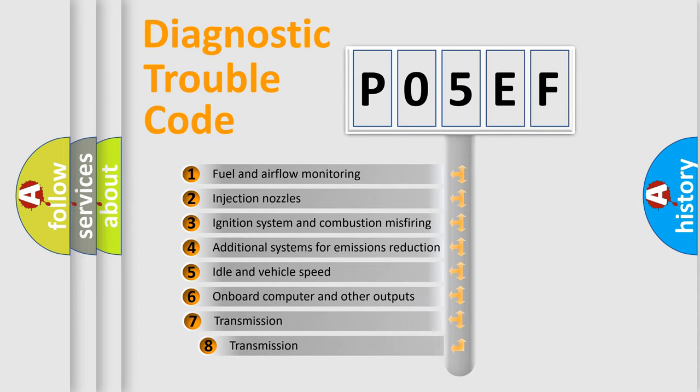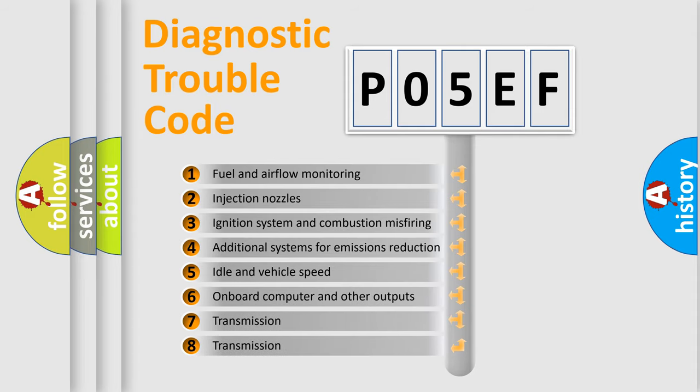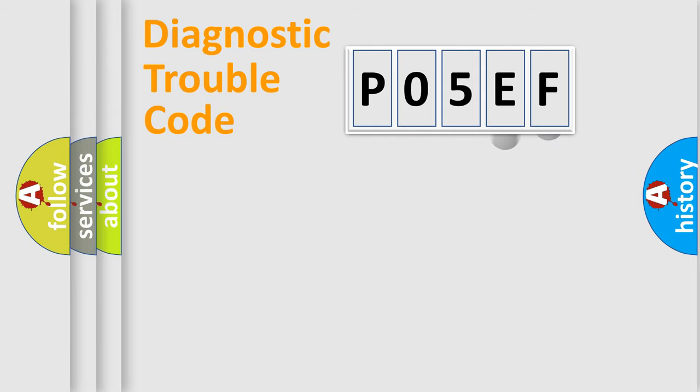The third character specifies a subset of errors. The distribution shown is valid only for the standardized DTC code. Only the last two characters define the specific fault of the group.